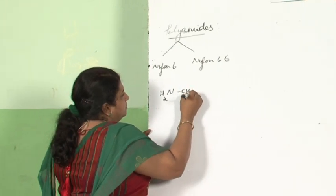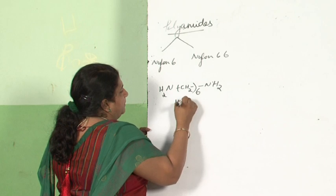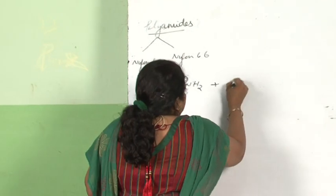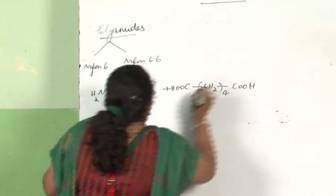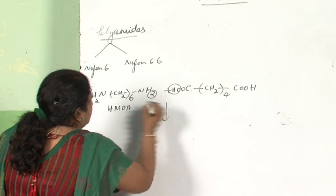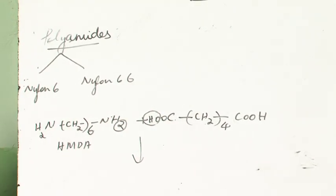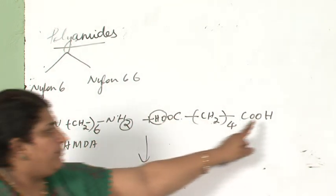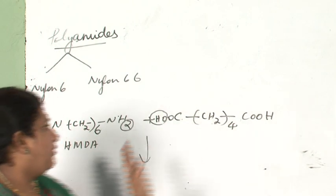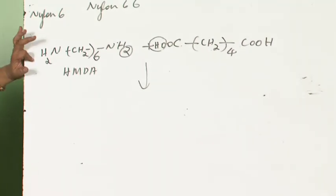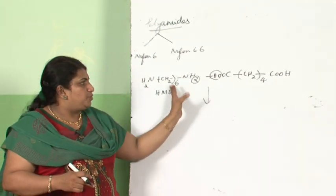Hexamethylenediamine, H2N-(CH2)6-NH2, combines with adipic acid, a dicarboxylic acid. The -OH from the carboxylic acid and one -H from the amine are removed, forming an amide linkage -CO-NH-. This chain keeps on growing as more adipic acid and hexamethylenediamine units add. This is condensation polymerization, also known as step growth polymerization.